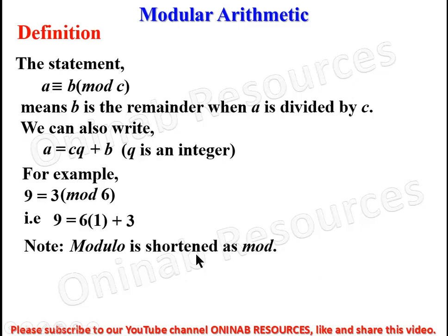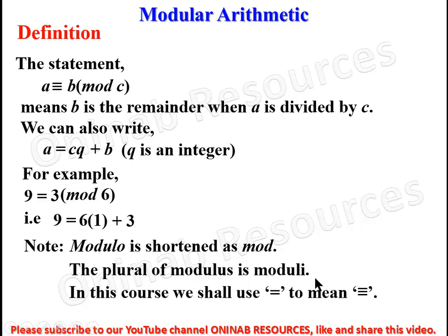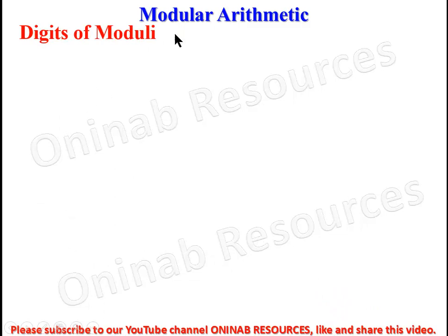Note that 'modulo' is shortened to 'mod', and the plural of modulus is 'moduli'. When we say 'mod c' or 'modulo c', we are referring to the modulus c. In this course, we shall use the equality sign to mean 'congruent to', rather than the equivalence symbol.